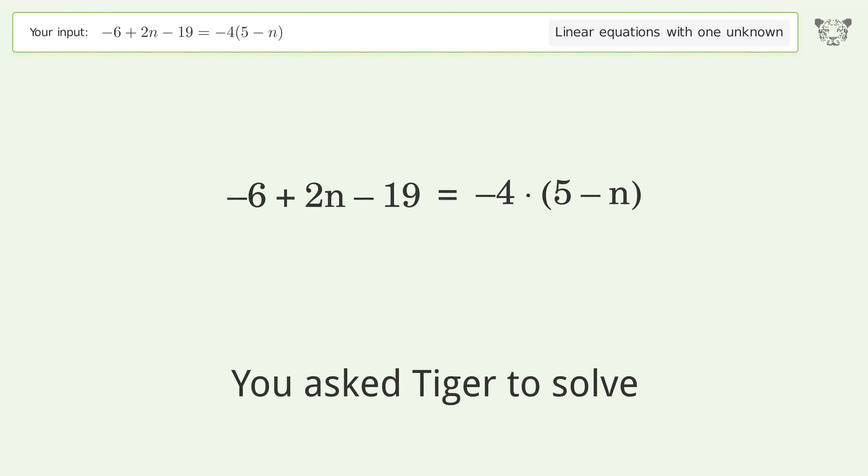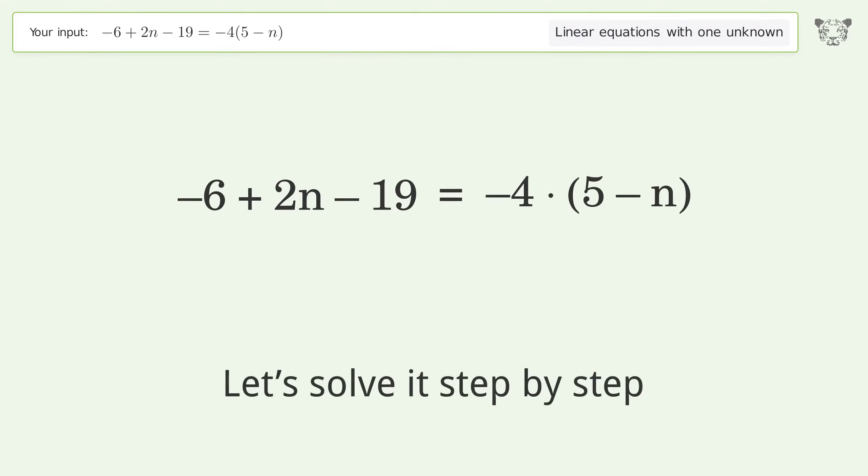You asked Tiger to solve this. This deals with linear equations with one unknown. The final result is n equals negative 5 over 2. Let's solve it step by step.